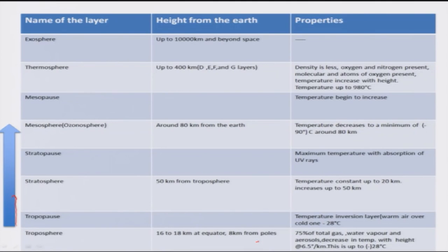Next to the troposphere, there is a middle component called the tropopause, where warm air starts. After the tropopause, you have the stratosphere, which extends 50 kilometers from the troposphere. Here the temperature, though increasing compared to the troposphere, is constant up to 20 kilometers and extends up to 50 kilometers. Then there is the stratopause, where maximum temperature occurs with the absorption of UV rays. So: first, the troposphere with decreasing temperature with height; then the stratosphere, where temperature gets warmed; and the stratopause with maximum temperature due to UV ray absorption.